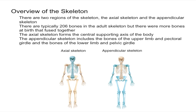The difference between the axial and the appendicular skeleton is essentially which bones each is comprised of. The axial skeleton, as you can see highlighted in blue, forms the central supporting axis of the body and consists of about 80 bones.